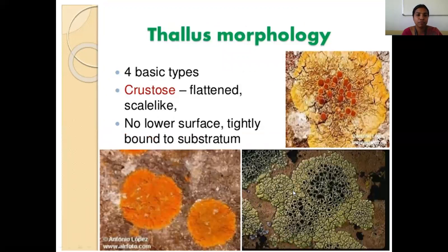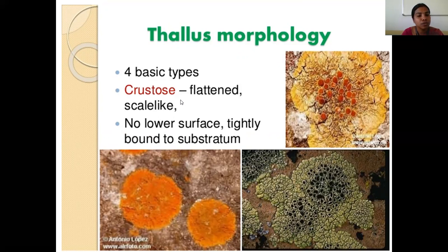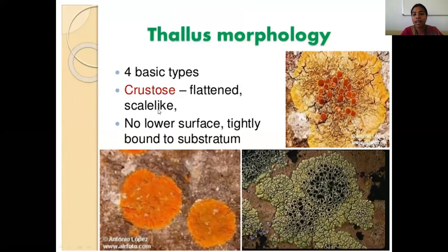Coming to the thallus morphology, there are four types: crustose, foliose, fructicose, and squamulose lichen. The first one is crustose lichen — it is a flattened structure, which is why there is no lower cortex. It is a scale-like, flattened structure with no lower surface, tightly bounded to the substratum like a crust.